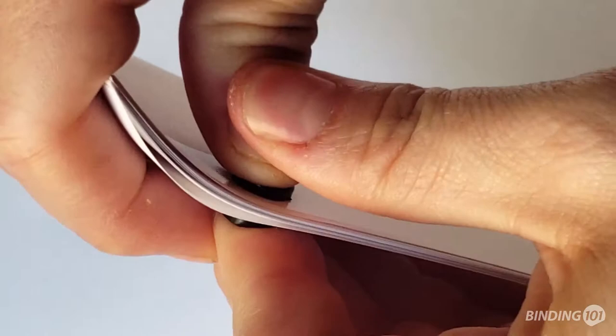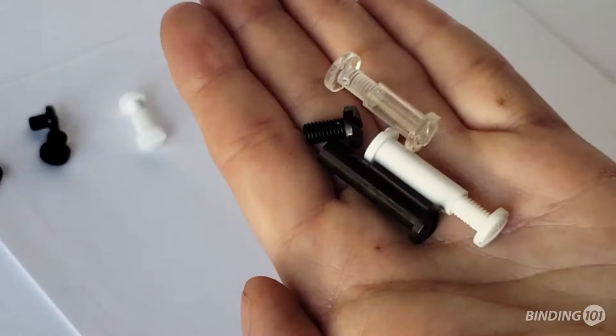When snapped, it creates a semi-permanent bind that is very difficult to pull apart, hence the name Snap-Lock.